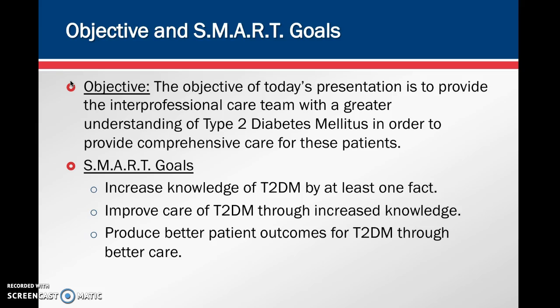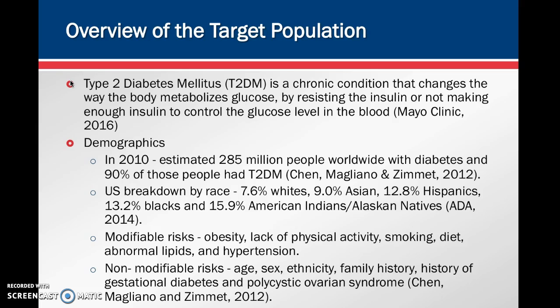An overview of our target population: type 2 diabetics have a chronic condition that changes the way the body metabolizes glucose by resisting insulin or not making enough insulin to control glucose levels in the blood. In 2010, an estimated 285 million people worldwide had diabetes, and 90% of those had type 2. In the U.S., the breakdown by race includes 7.6% of whites, 9.0% Asians, 12.8% Hispanics, 13.2% blacks, and 15.9% American Indians or Alaskan Natives.